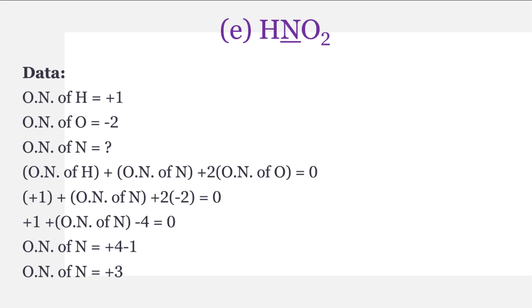Now the last part E: nitrous acid HNO2. Oxidation number of hydrogen is plus one and oxidation number of oxygen is minus two. Formula ki form mein: oxidation number of hydrogen plus oxidation number of nitrogen plus two multiplied by oxidation number of oxygen equals zero. Values put karenge aur simple calculation ke baad oxidation number of nitrogen is equal to plus three.